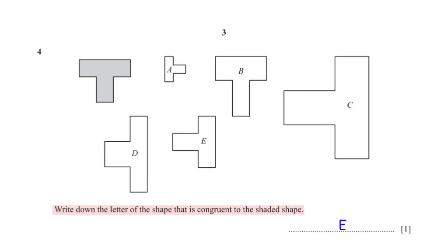Write down the letter of the shape that is congruent to the shaded shape. The shape congruent to the shaded shape must have the exact same size as the shaded shape. From the shapes, we see that shape E has the exact same size as the shaded shape.